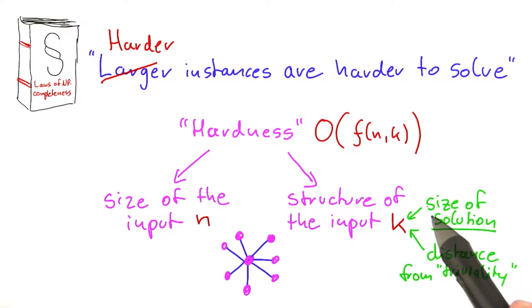So in the case of vertex cover, it turns out that what makes solving vertex cover hard is actually the size of the vertex cover itself. So if there's a small vertex cover, then the problem is easy. And if it's large, then the problem becomes hard.